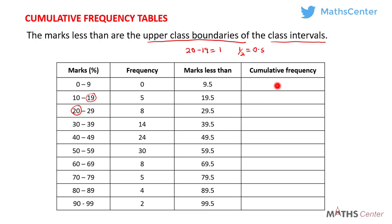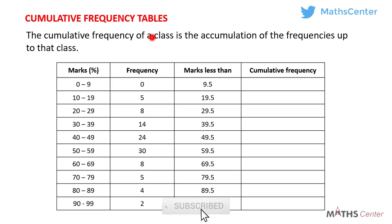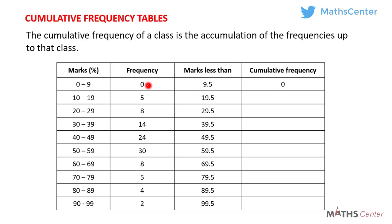Let's move on to the cumulative frequency column. The cumulative frequency of a class is the accumulation of the frequencies up to that class. To get the cumulative frequency for a particular class, we add all the frequencies up to that class. The first frequency is 0, so the cumulative frequency is also 0. The next frequency is 5, so the cumulative frequency is 0 plus 5 which gives us 5.